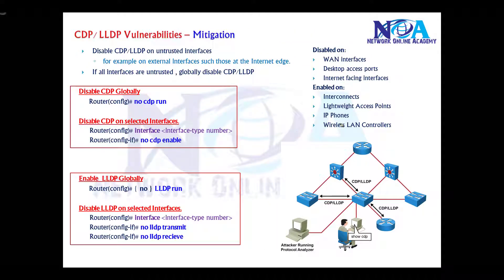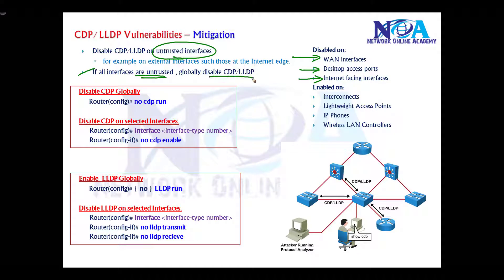It is recommended to disable CDP on untrusted interfaces, like the WAN interfaces provided by the service provider, access interfaces, and internet-facing interfaces. All untrusted interfaces should have CDP or LLDP disabled, and you can do this either globally or on a per-interface basis.